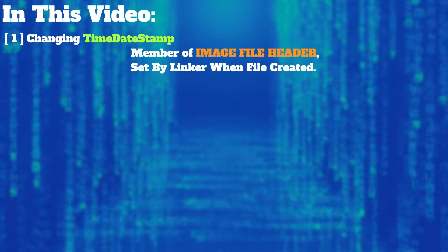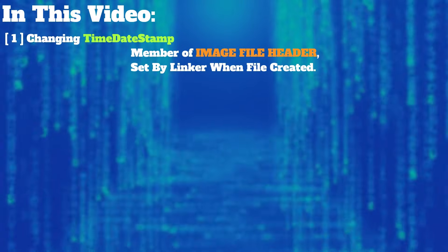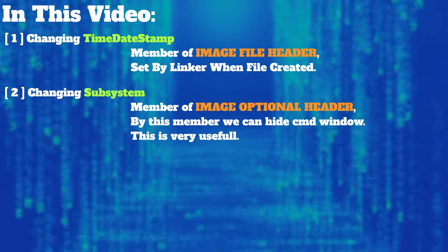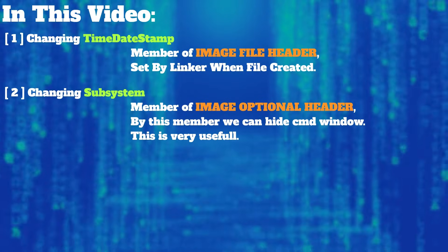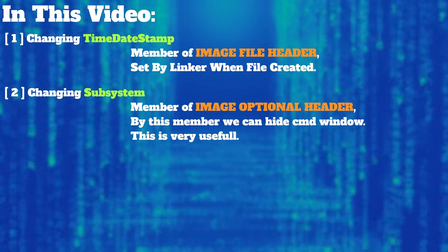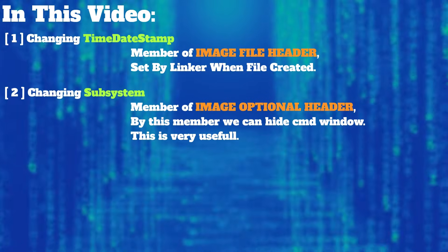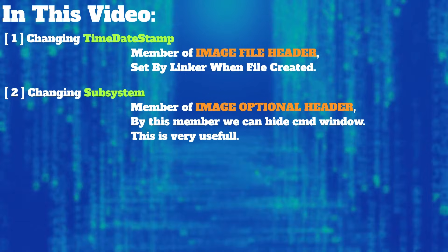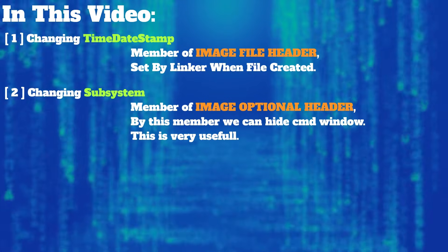We will be covering three changes: changing the TimeDateStamp member of the image file header, which is set by the linker when the file is created; changing the subsystem member of the optional header; and changing the address of entry point, which changes the start point of the app.